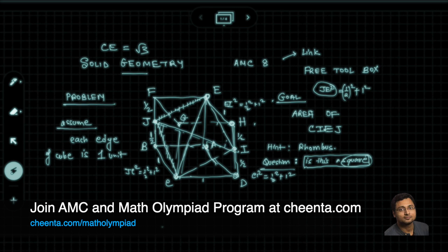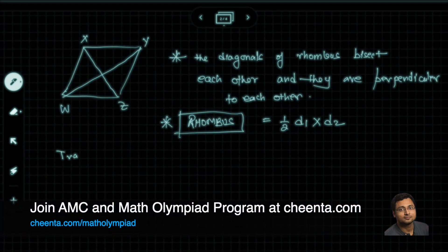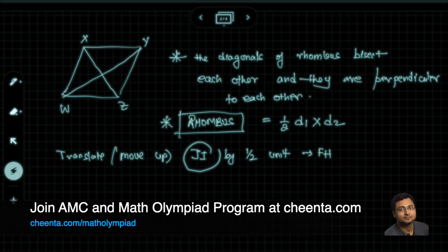So CE is square root of three. And to find out the other diagonal JI, you basically have to push this JI up by half units. If you push JI up, that is translated by half units, then you will reach FH. So the strategy is this: translate, that is move up, and you will reach—the length of JI is therefore same as the length of FH.